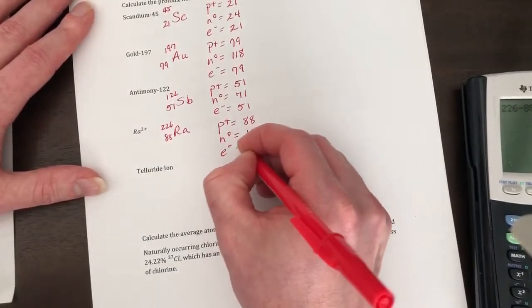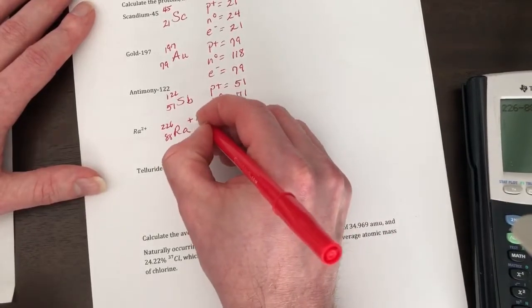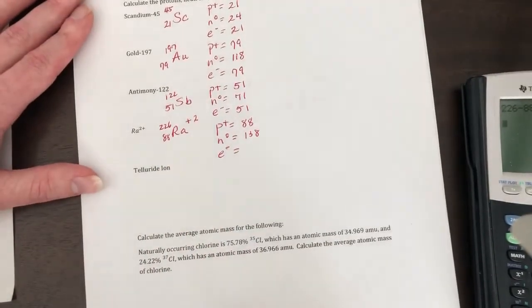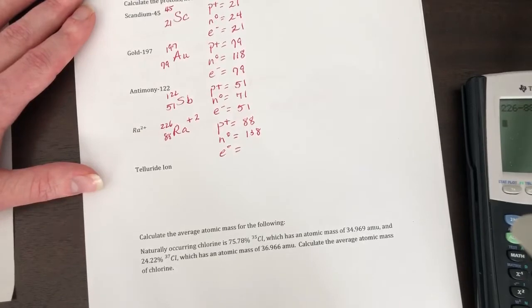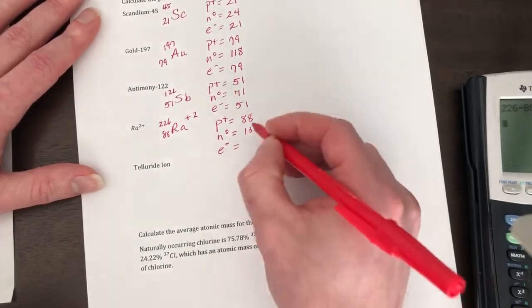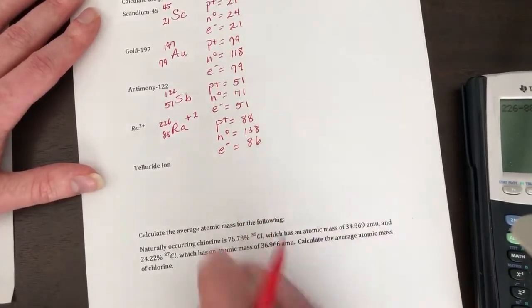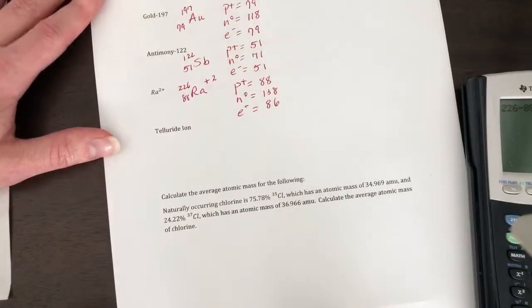Now your electrons. So this has a plus 2 charge, so that means that we lost two electrons. So 88 minus 2 is 86.